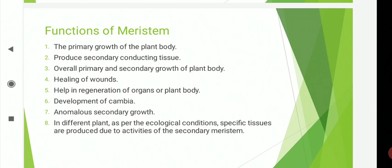Healing of wounds in plants is possible due to formation of cork cambium or callus in the vicinity of the wound by the meristem. Lateral organs such as leaves, flower buds, branches, and fruits develop from a specific meristem, for example intercalary meristem. Adventitious buds develop from meristem and help in the regeneration of organs or the plant body. Development of seasonal cambium as meristematic tissue is responsible for seasonal growth in organs like root and stem. Anomalous secondary growth is possible due to adventitious meristem, and in different plants, as per ecological conditions, specific tissues are produced due to activities of secondary meristem.